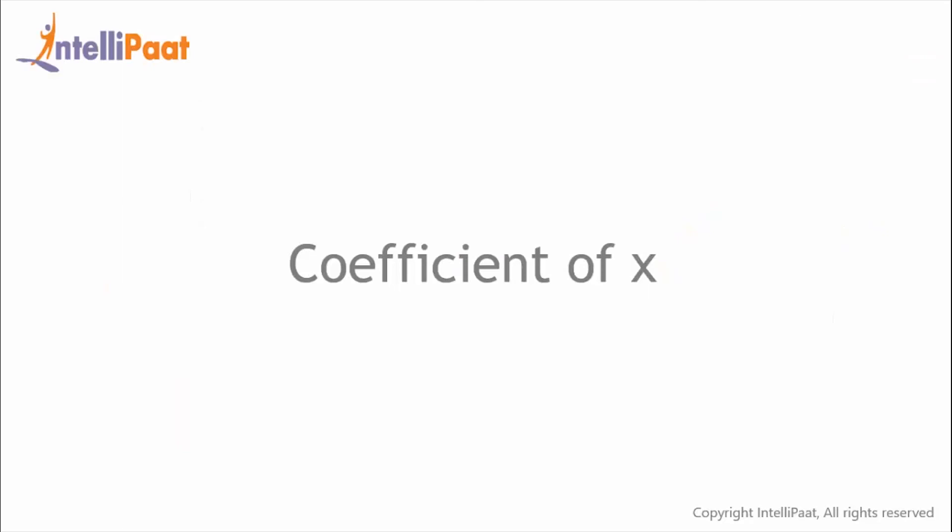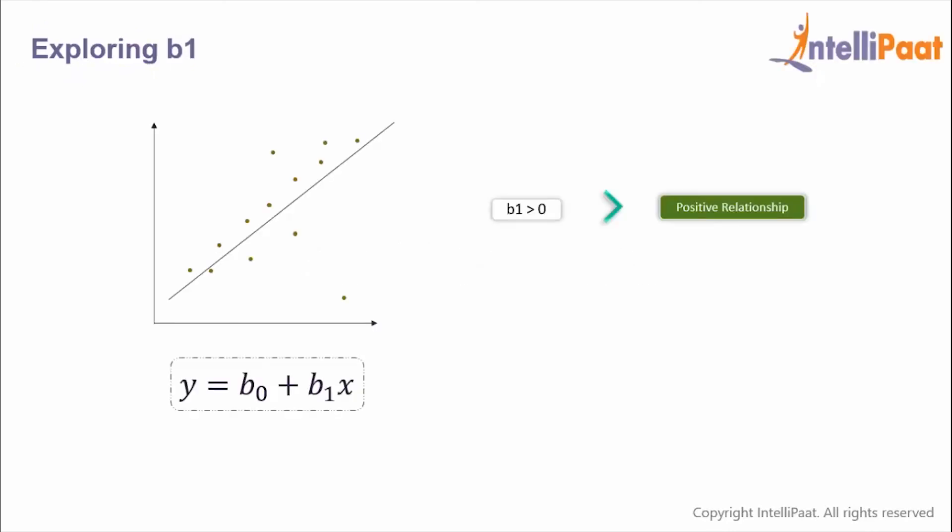So now we'll learn how the coefficient of X influences the relationship between the independent variable and the dependent variable. If it is simple linear regression and the value of coefficient of X is greater than zero, then the relationship between independent and dependent variables would be positive. That is, as the value of X increases, the value of Y would also increase.